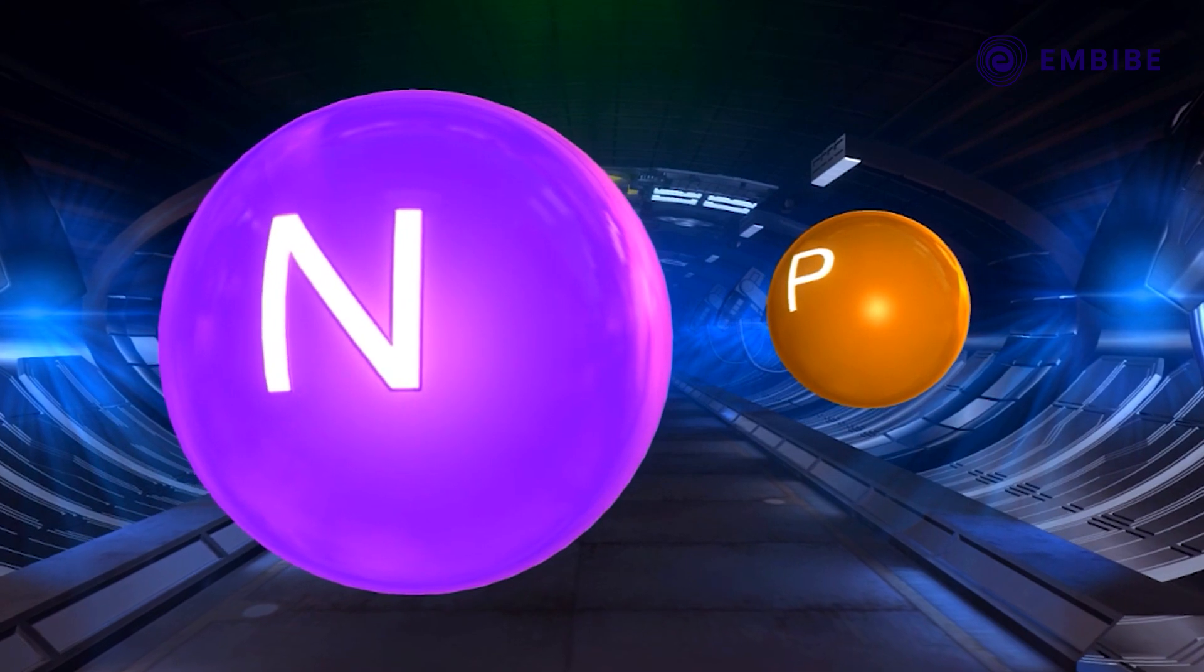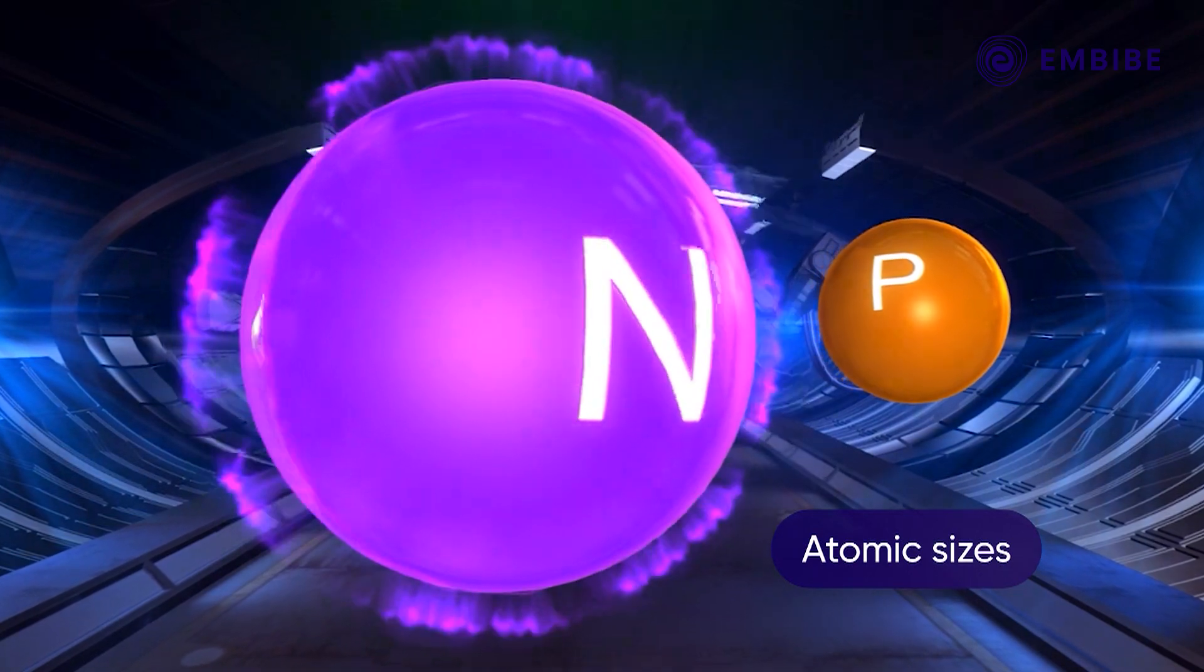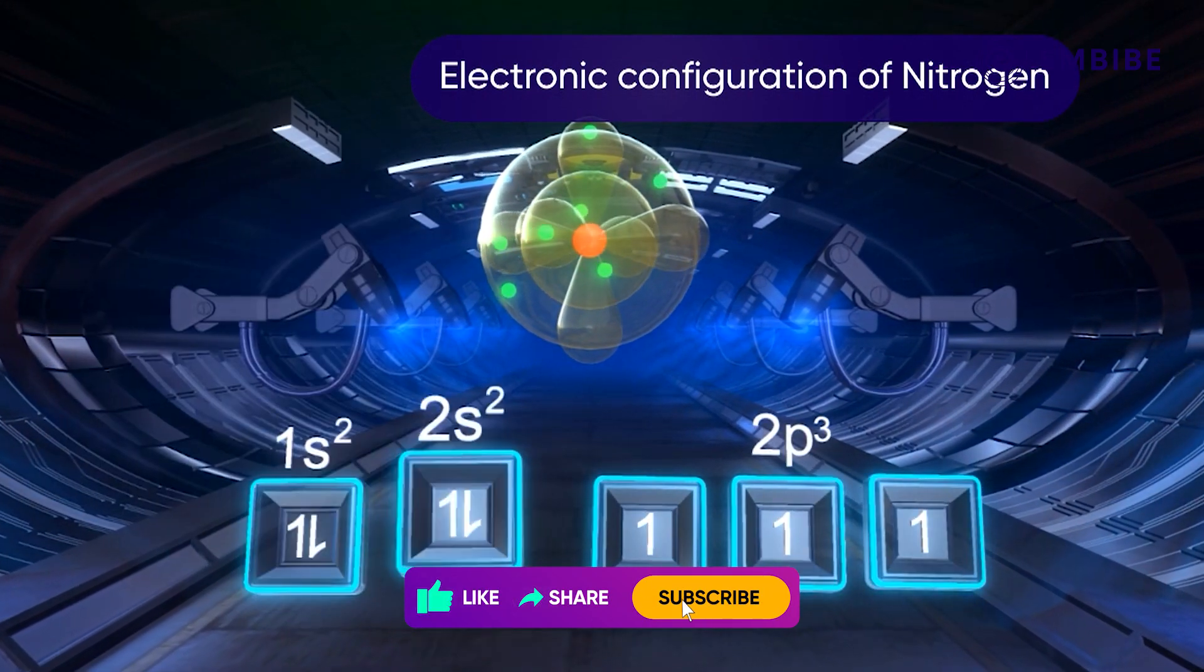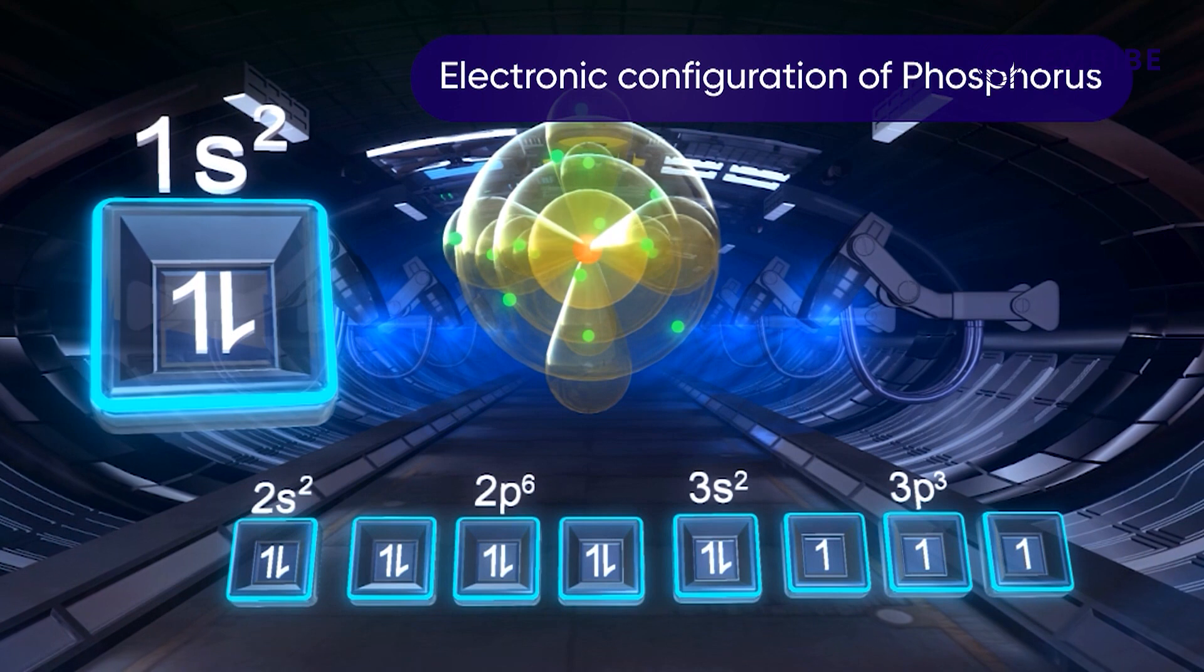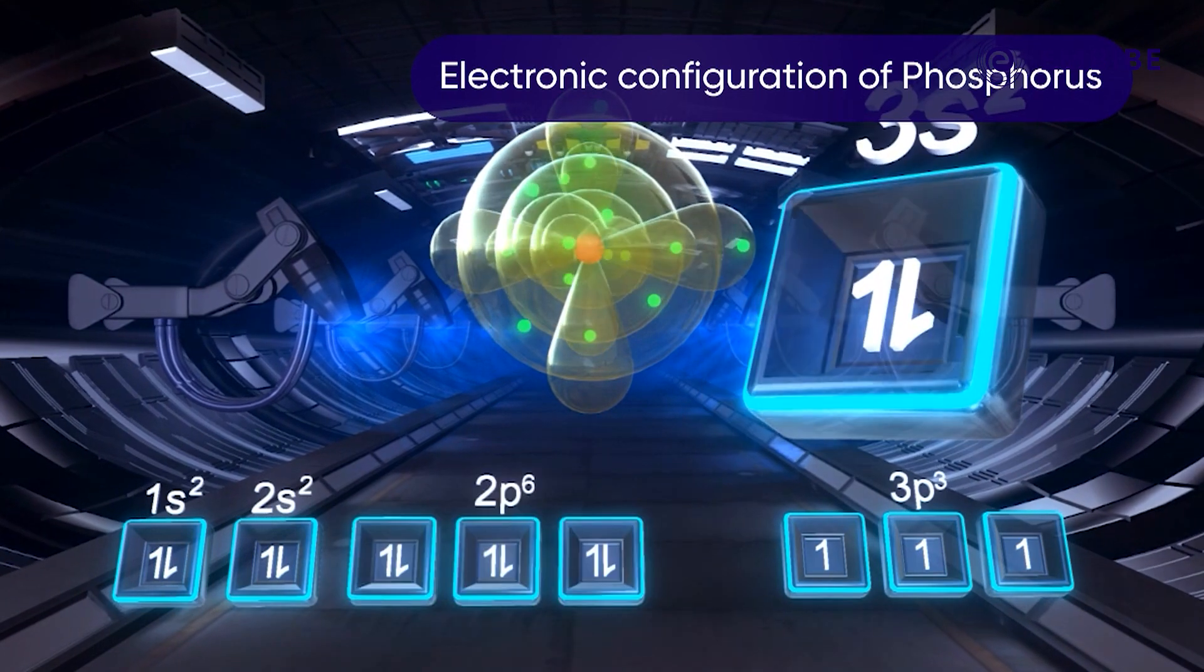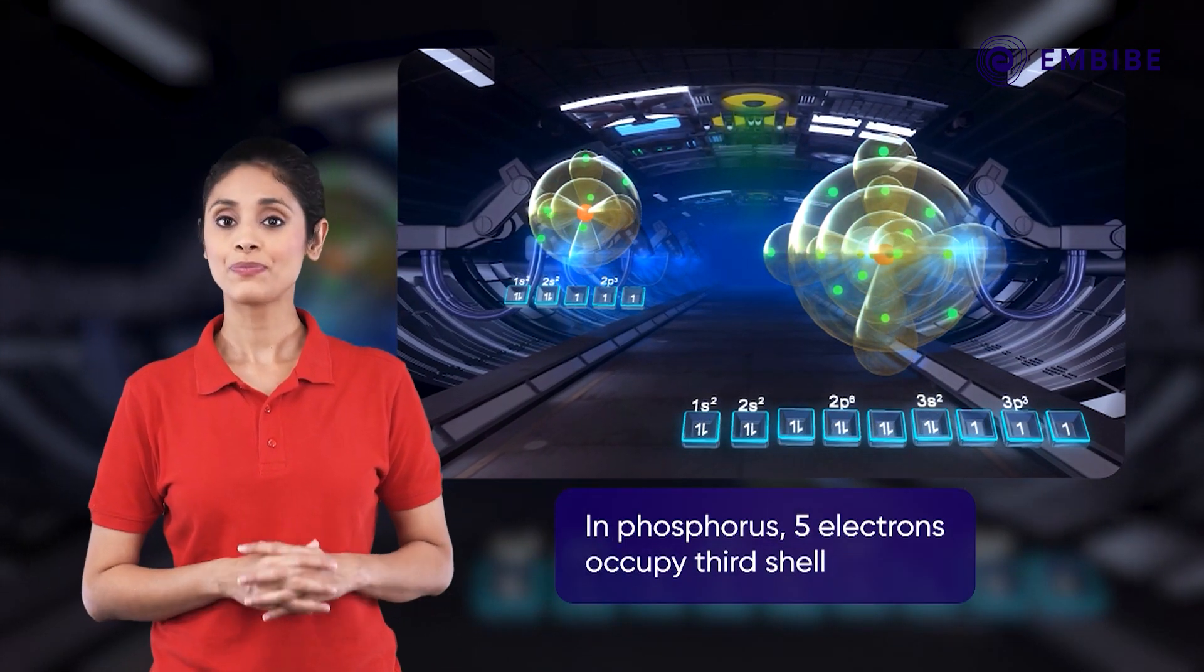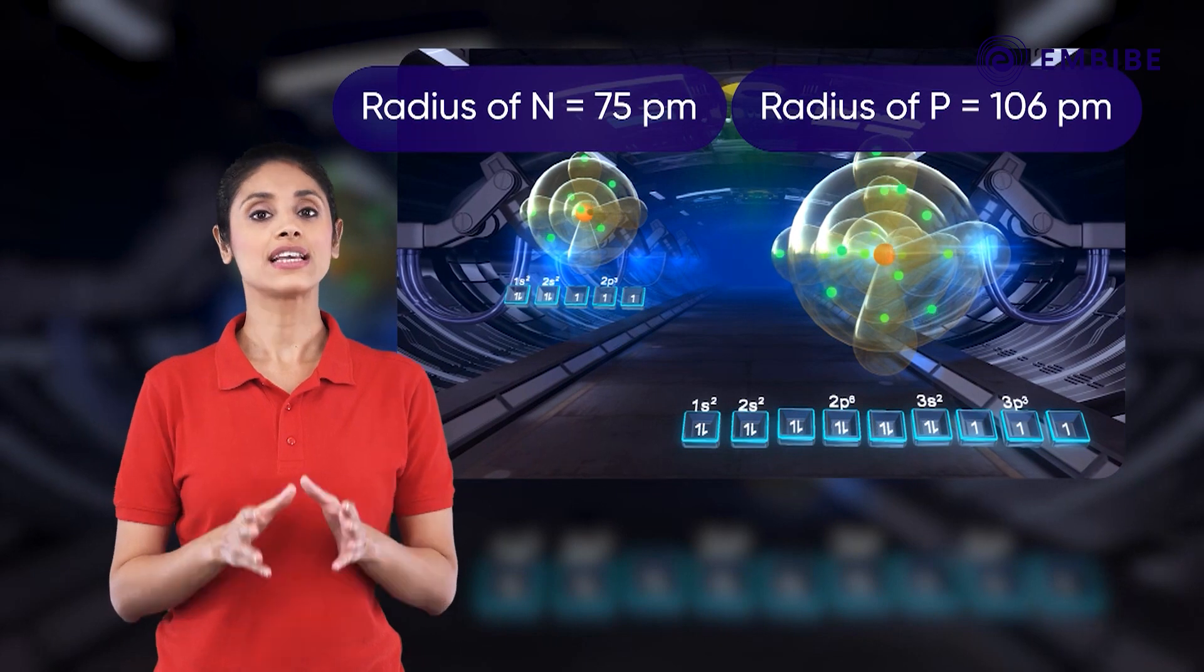Why is this so? This can be explained on the basis of differences in their atomic sizes and electronegativities. The electronic configuration of nitrogen is 1s² 2s² 2p³, while that of phosphorus is 1s² 2s² 2p⁶ 3s² 3p³. Among the added electrons, 5 occupy a new shell (n=3) in phosphorus, and consequently phosphorus is a larger atom.